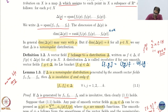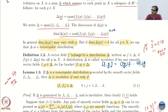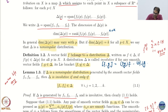It says: a non-singular distribution generated by smooth vector fields is involutive if and only if the Lie bracket between Fi and Fj is in the distribution.